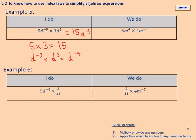For the 'We do': start with the coefficients — 5 times 4 equals 20. Then m to the power four times m to the power negative seven: negative four plus negative seven gives negative three. Answer: 20m to the power negative three. Really well done if you got that right. Pause the video, copy that down or mark it in green pen, and spot any mistakes if you made any.